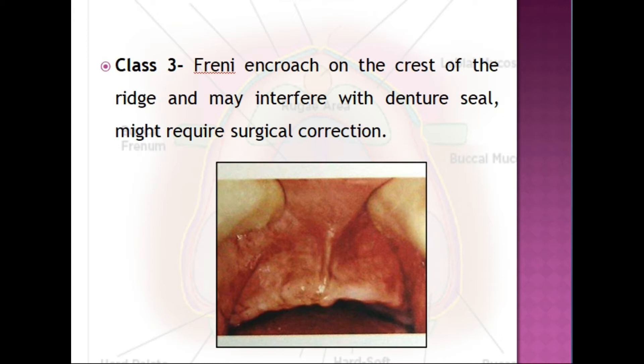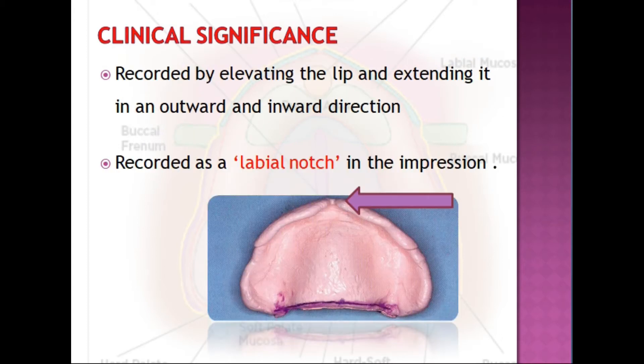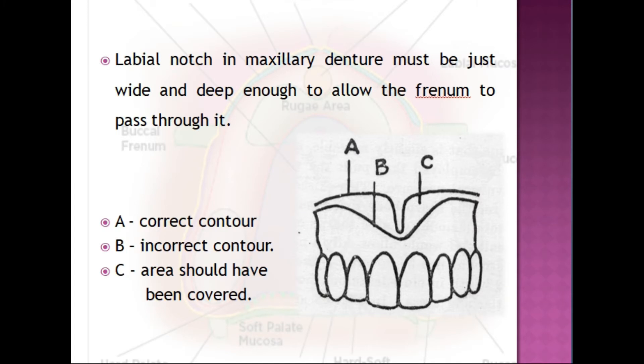The clinical significance: the labial frenum is recorded by elevating the lip and extending it in an outward and inward direction. The corresponding denture landmark in the impression is a labial notch. The labial notch in the maxillary denture must be just wide and deep enough to allow the frenum to pass through it.